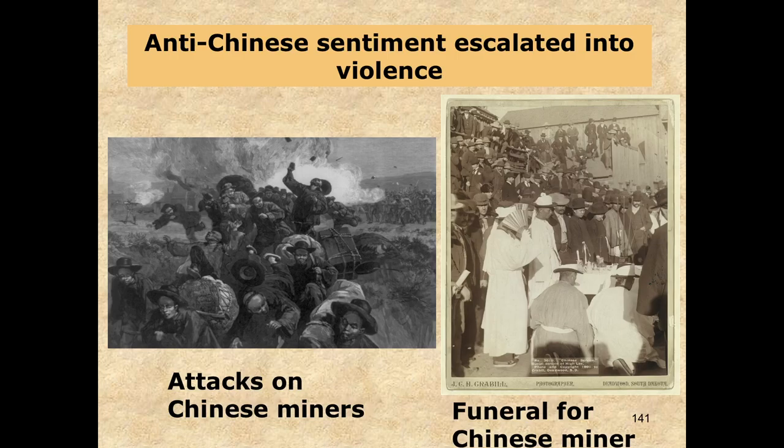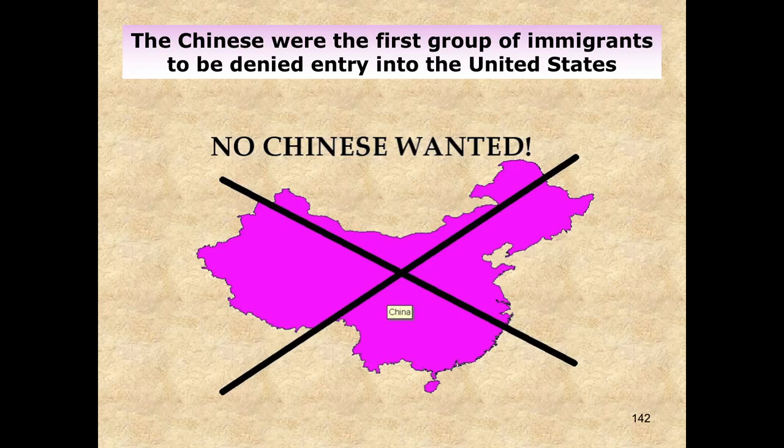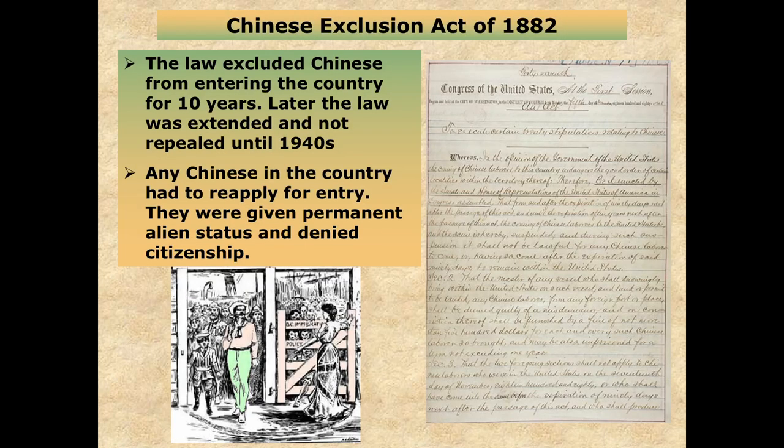It gets so bad that government officials in places like California are going to lobby the government to exclude the Chinese from coming in. This is where we get the Chinese Exclusion Act. If you ever blank on what this is, just use your context clues — Chinese Exclusion? Who are they excluding? The Chinese. The Chinese Exclusion Act of 1882 is the byproduct of all of this racism and nativist sentiment towards the Chinese. This law was in effect for a good 10 years, but we will still continue to see discrimination against the Chinese.